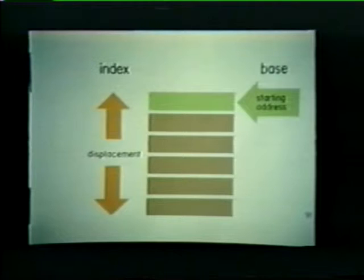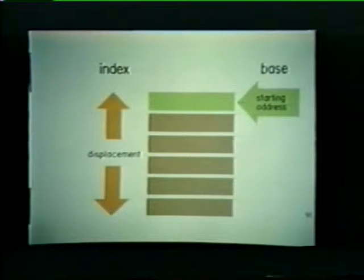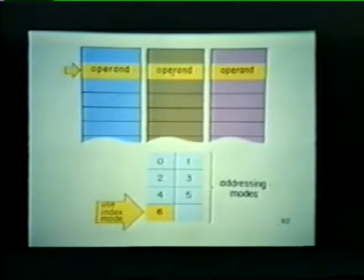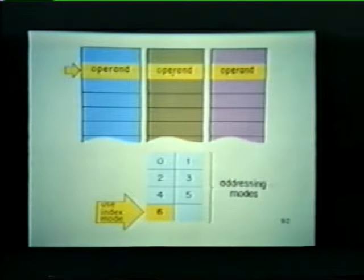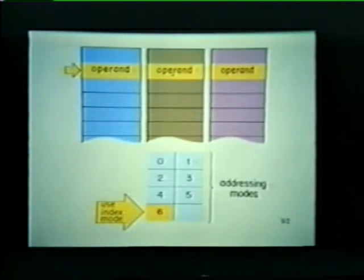We've now covered one possible use of the index mode. It allows us to address any entry in a table simply by specifying the location of that entry relative to a starting address. Now, suppose we're working with several tables and we need to update the second entry in each table. Once again, we can use the index mode to locate our operands.